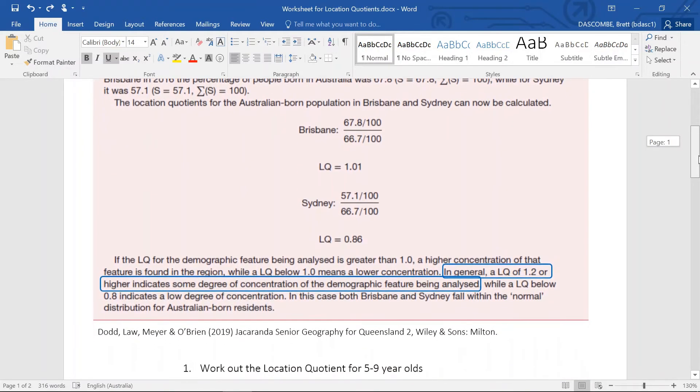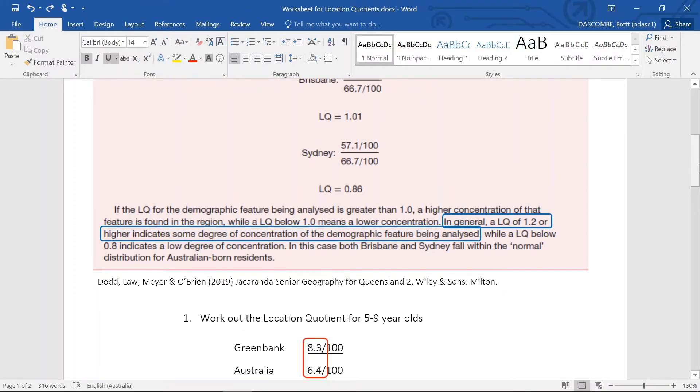And we'll go down and have a look at Sydney: 57 and 67. Now what do those numbers tell us?